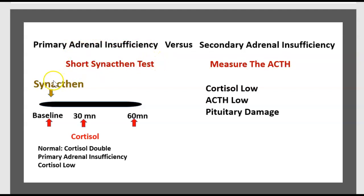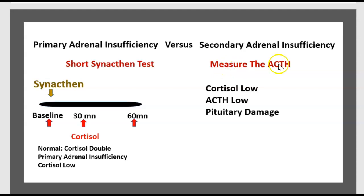For the Synacthen test, we give synactone and measure cortisol at baseline, 30 minutes, and 60 minutes. Normally, cortisol should double after 60 minutes. If cortisol is low, it indicates primary adrenal insufficiency. For secondary adrenal insufficiency, we measure ACTH — if cortisol is low and ACTH is also low, it indicates pituitary damage.